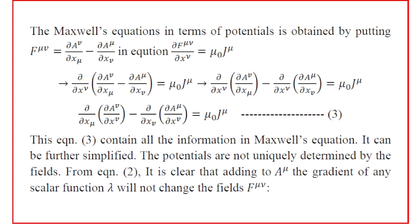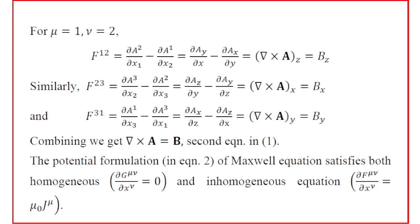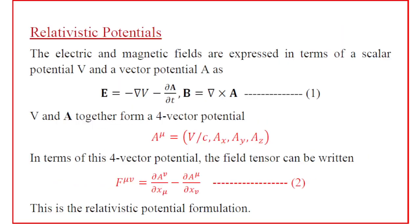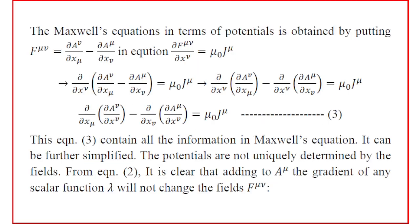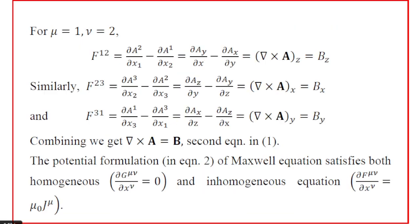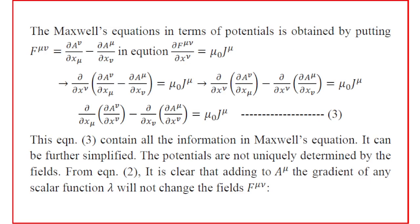Maxwell's equation in terms of potentials is obtained by substituting the field tensor in terms of potentials. The inhomogeneous Maxwell's equation is ∂F^μν/∂x^μ = μ0 J^μ. We replace the field F^μν by the corresponding potential expression.